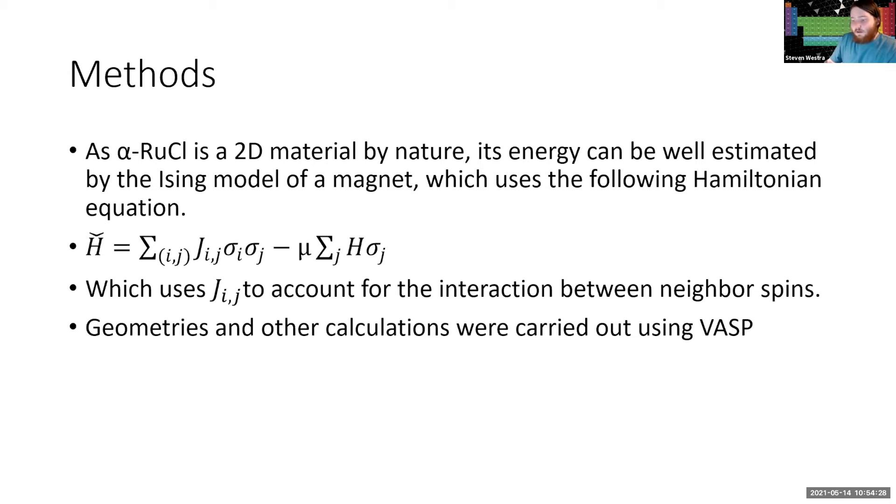Methods. So alpha-ruthenium chloride is a two-dimensional material by nature. It is similar in structure in bulk form to graphite, a van der Waals force layered material with thin single atom thick layers. And as such, it can be well estimated by the Ising model of a magnet, which uses the following Hamiltonian equation. The particular component of importance is the J sub ij, which accounts for the interaction between neighboring spins and is a material constant.